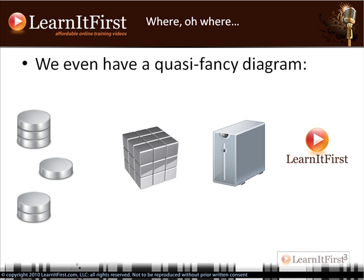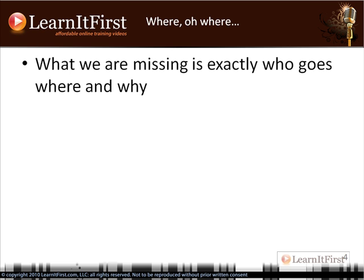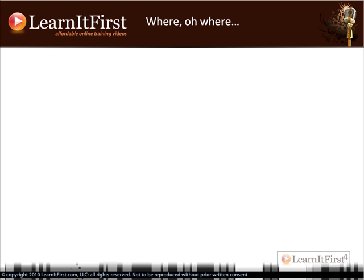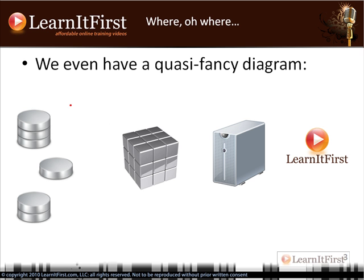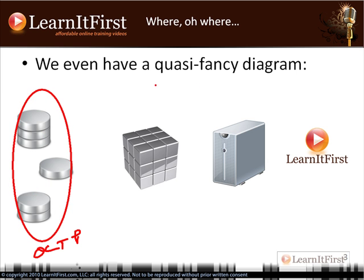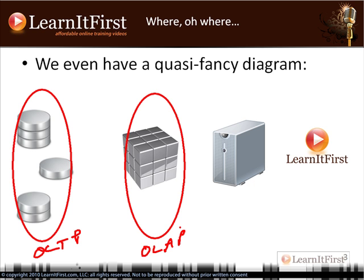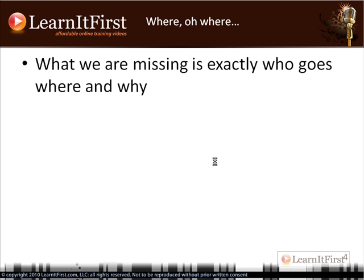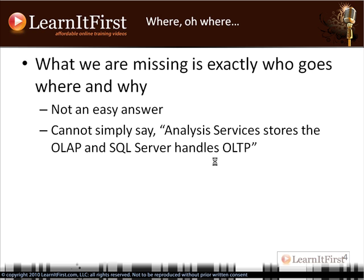So we've got the basics down and we've even got a fancy diagram. What we're missing is what goes where and why. At the end of the last video I said this is our OLTP and this is our OLAP, but then I came back and said it's a little misleading — we'll talk about why. We need to understand why this might be an incorrect diagram. You cannot just say that SQL Server, Oracle, or DB2 handles the OLTP side and Analysis Services handles the OLAP. It's not that simple.